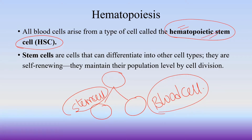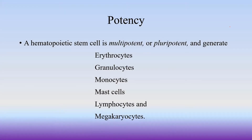The hematopoietic stem cell is a multipotent stem cell. It means that it has the capacity to produce multiple types of cells. Potent means the capacity to produce multiple cell types.